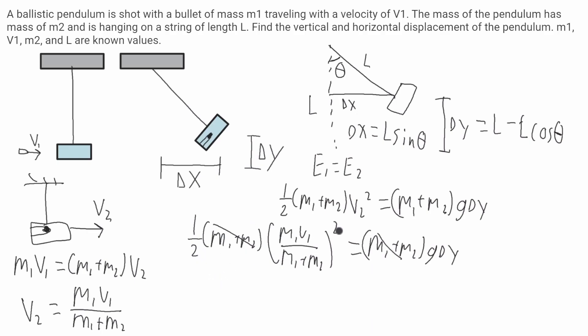So now I'm going to distribute this square to both of the terms at the top, and this quantity at the bottom will be squared. It'll be one half times m1 squared v1 squared over m1 plus m2 quantity squared. This will be equal to g delta y.